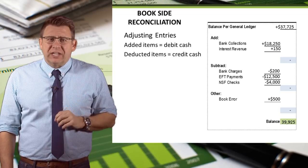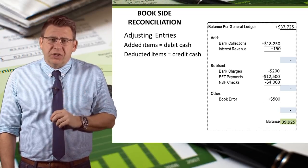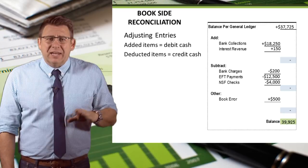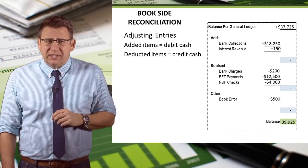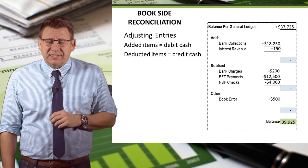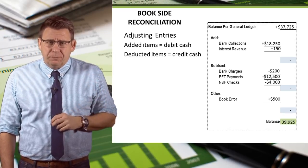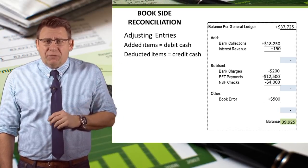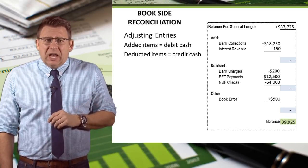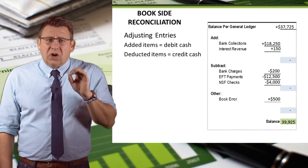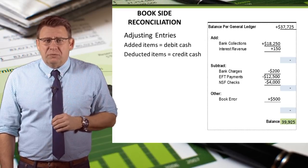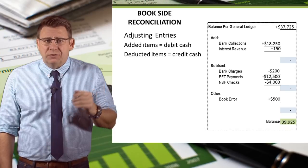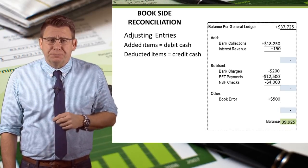Cash adjusting entries aren't too difficult to figure out if you remember the following. Items that are added in the reconciliation process mean a debit to cash and a credit to whatever account the item relates to. Items that are deducted in the reconciliation means a credit to cash and a debit to whatever the item relates to.